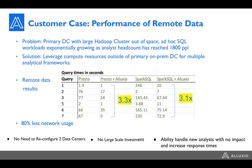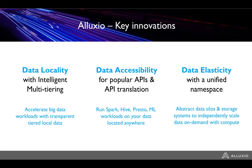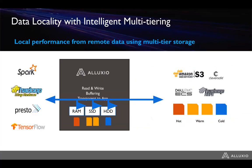We've spent time talking about the challenges, the desire to move to the cloud, and a bit about Alluxio and some customers using it. Let's dig into the technology and give a sense for how Alluxio does these things. With Alluxio, there are a couple of key innovations that, combined, give you data orchestration capability for hybrid cloud: data locality, data accessibility, and data elasticity.